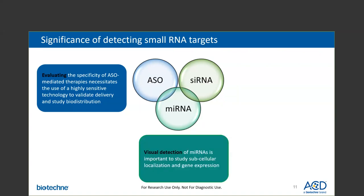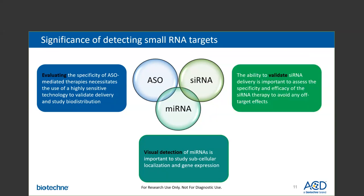Next, microRNAs can influence not only a single gene, but entire cellular pathways or processes. Visual detection of microRNAs is important to examine subcellular localization and gene expression. Last but not least, siRNA is one of the most promising types of RNA-based therapeutic approaches to silence target RNA. As a result, the ability to validate siRNA delivery is important to assess the specificity and efficacy of the siRNA therapy to avoid any off-target effects.